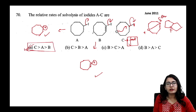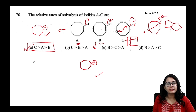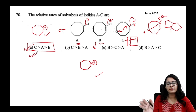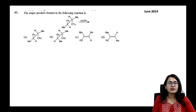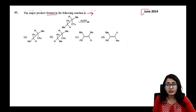The correct order for the rate of solvolysis is: C > A > B. Moving to the next question — the major product formed in the following reaction — which was asked in June 2014.